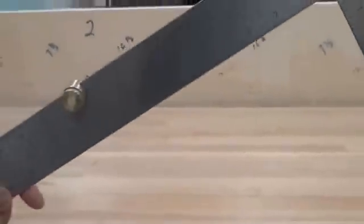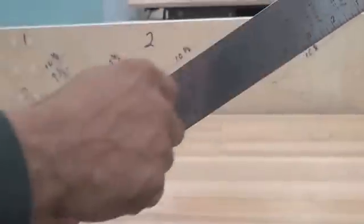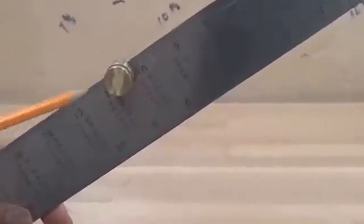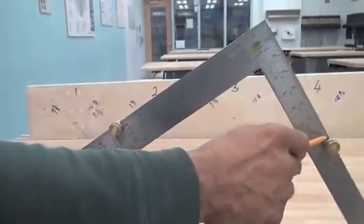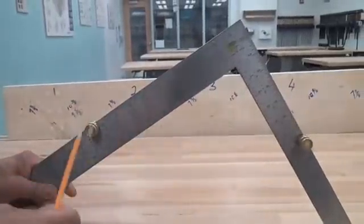On the other side of the framing square, on the body of the framing square, the bigger part, we then put a button at 10 and 1 eighth. So now what we have is the runs on one side, the rises on the other side, and we have formed actually a right angle triangle.